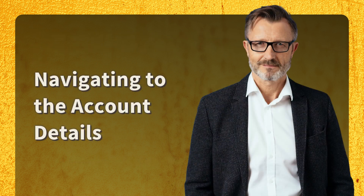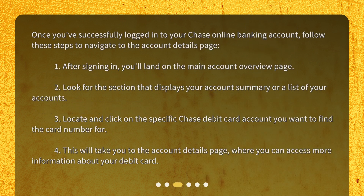Navigating to the account details. Once you've successfully logged in to your Chase Online Banking account, follow these steps to navigate to the account details page. 1. After signing in, you'll land on the main account overview page. 2. Look for the section that displays your account summary or a list of your accounts. 3. Locate and click on the specific Chase debit card account you want to find the card number for. 4. This will take you to the account details page, where you can access more information about your debit card.